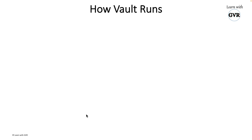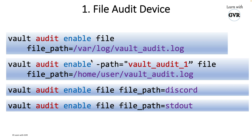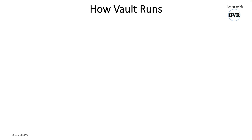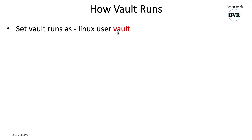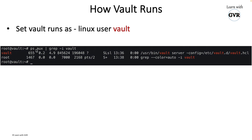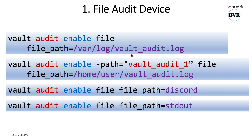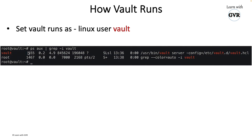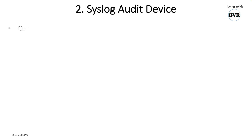When executing the file audit enable command, you may get an error. Vault runs as a Linux user called 'vault' — not as root. You can verify this by running 'ps aux | grep vault', which shows the Vault configuration file running as the vault user. The folder where you want to write logs must have access permissions for the vault user, otherwise the command will fail. We'll see this in the demo.